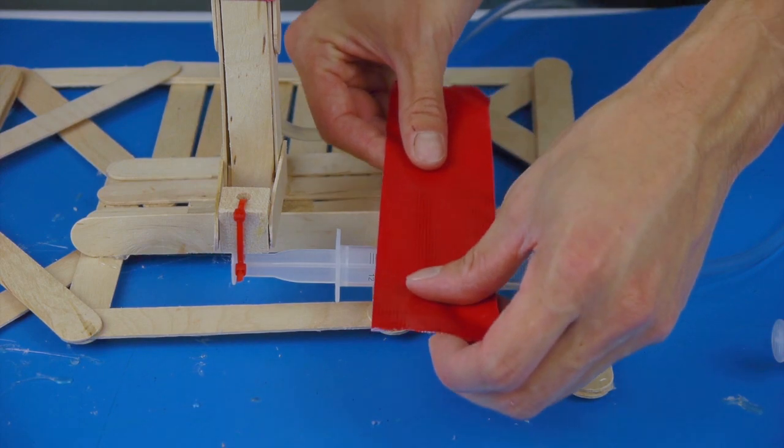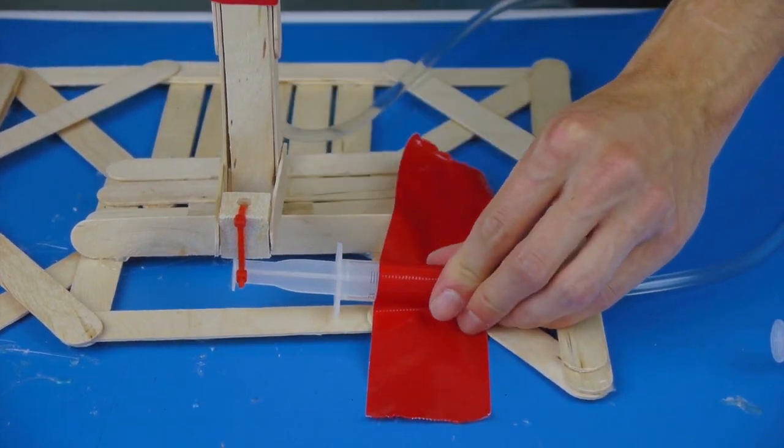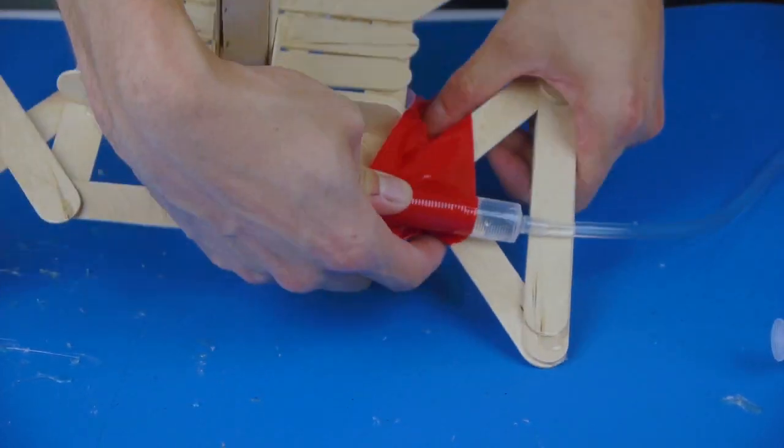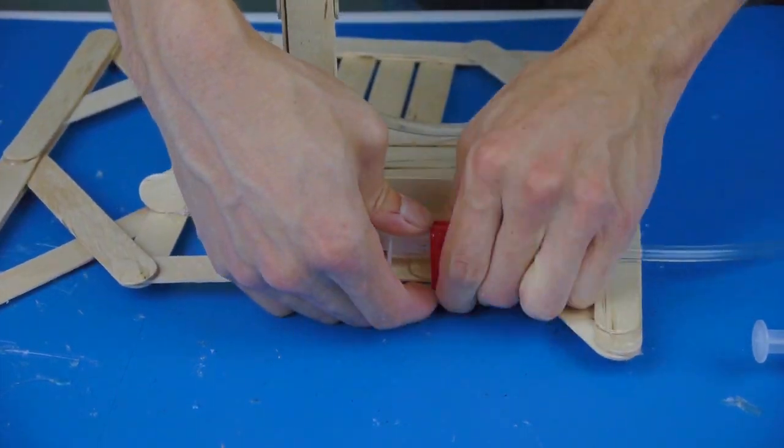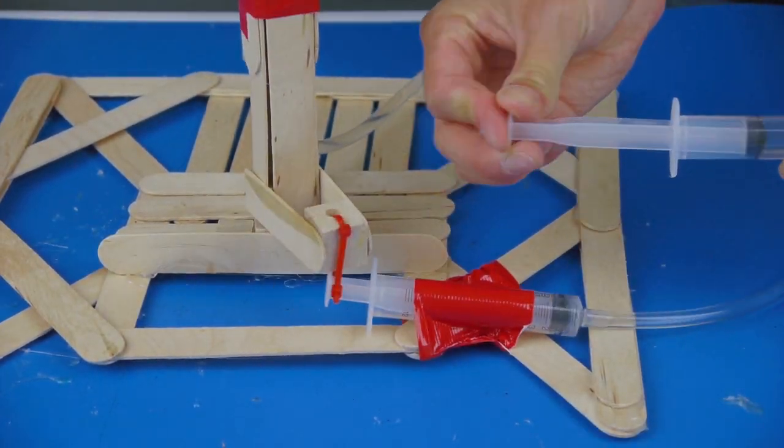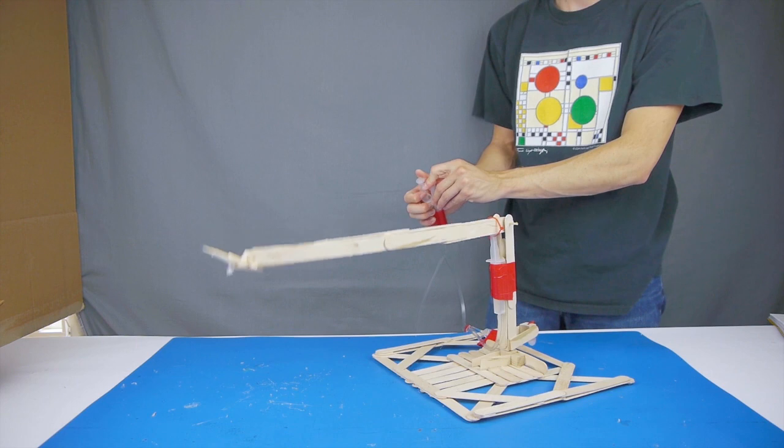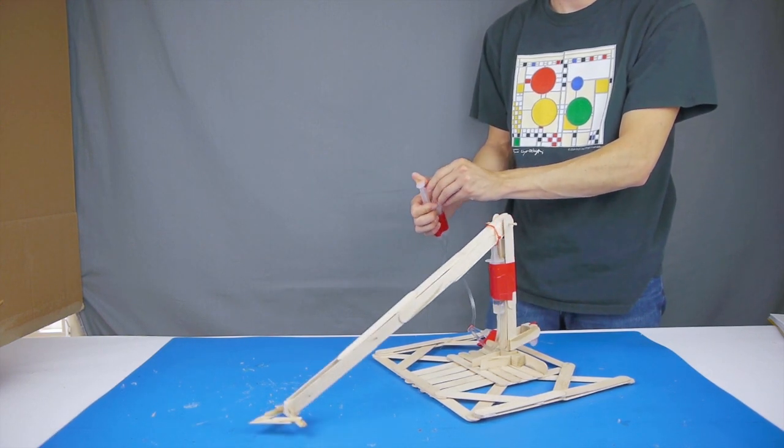Strap the syringe to the base with another piece of duct tape. Since all bases will be built differently, you may need to get creative with how you attach the hydraulic system to the pivot column. Give it a test, and make sure that your fighting robot has a full range of movement like this one.